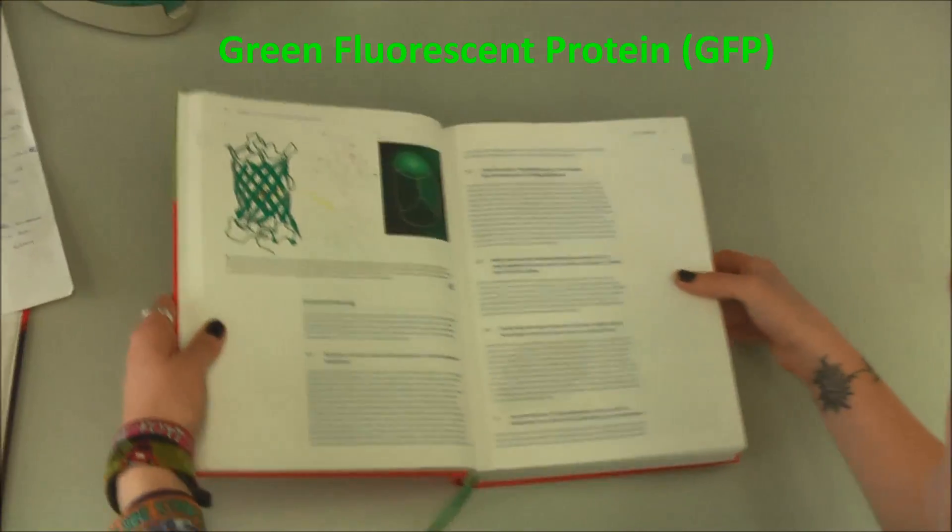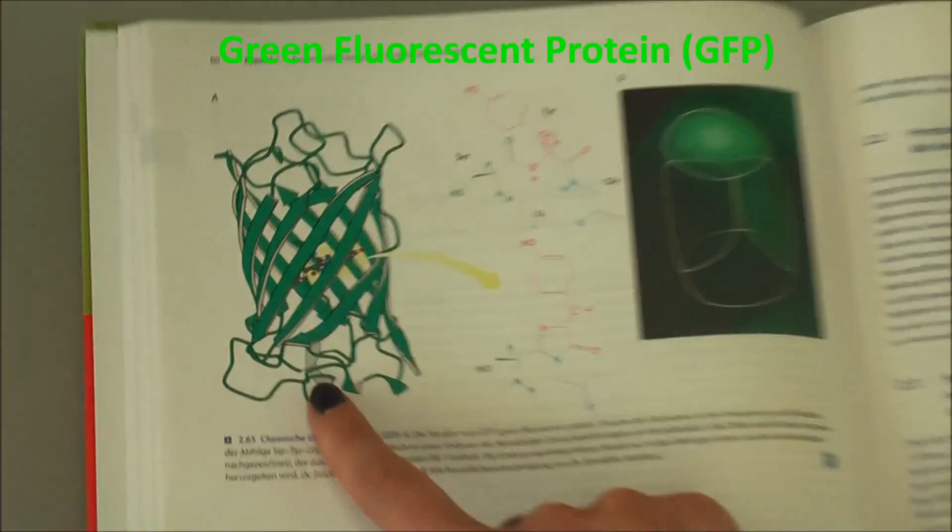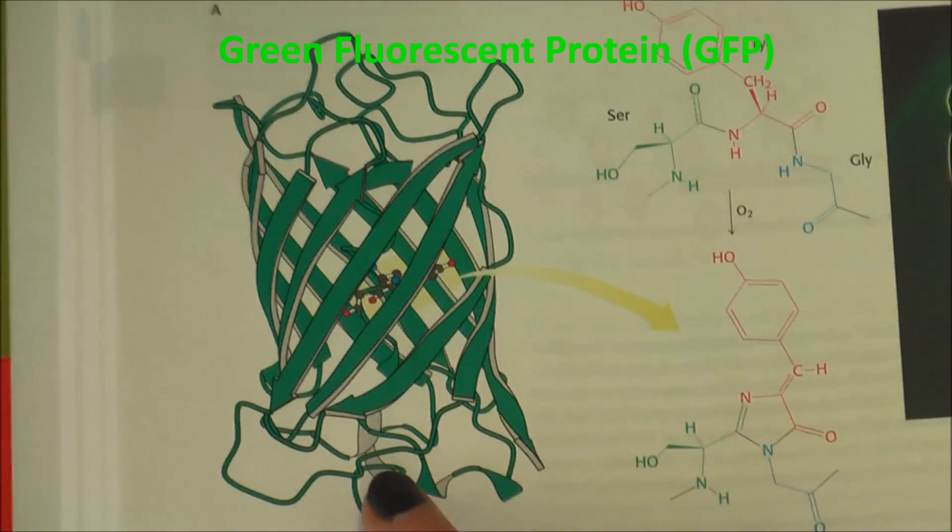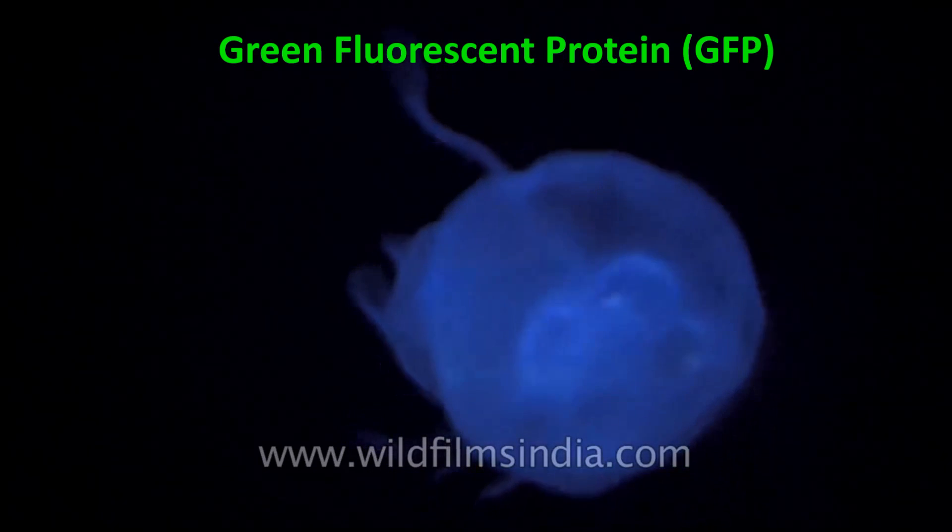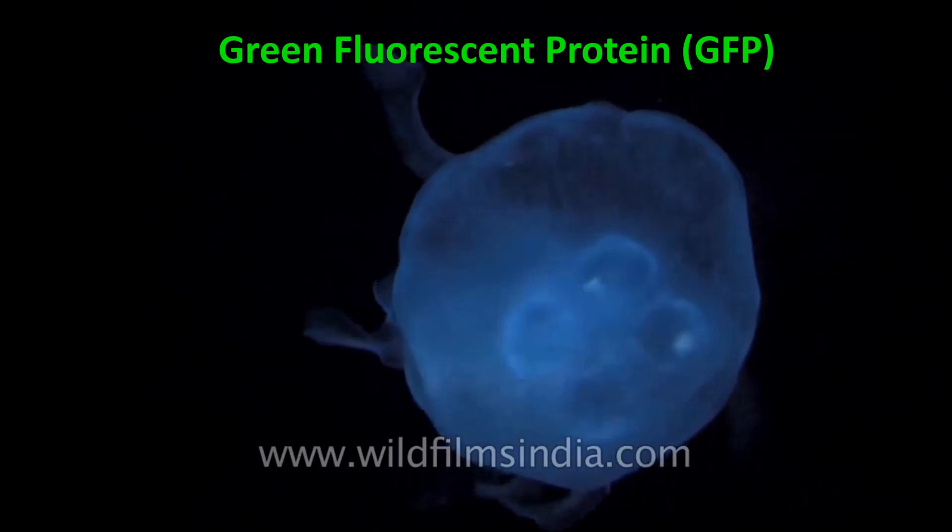Therefore, scientists use help from nature. In 1962, the green fluorescent protein, GFP, was first described. It is produced by a jellyfish and when excited with blue light, it fluoresces in green color.